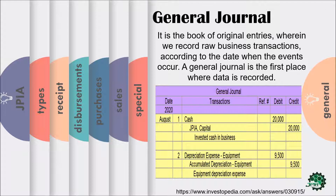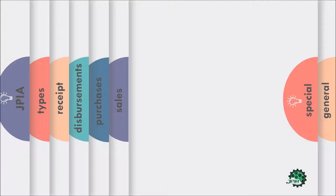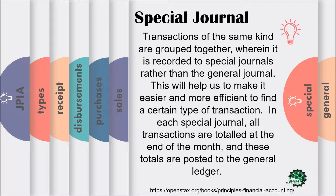If the companies decided to use the special journal, then the transactions of the same kind are grouped together, wherein they are recorded to special journals rather than the general journal. This will help make it easier and more efficient to find a certain type of transaction. In each special journal, all transactions are totaled at the end of the month and these totals are posted to the general ledger.